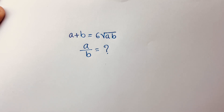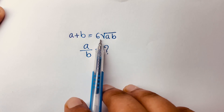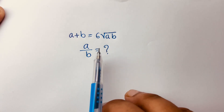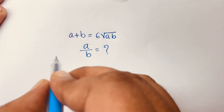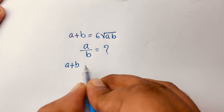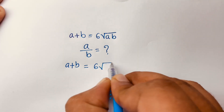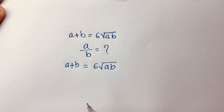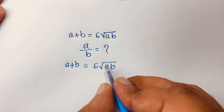Hello everyone. How to solve this math question: a plus b is equal to 6 square root of ab. We'll find out what is the value of a over b. So first of all, a plus b is equal to 6 square root ab, and we want to eliminate this square root.